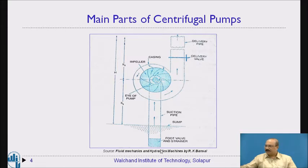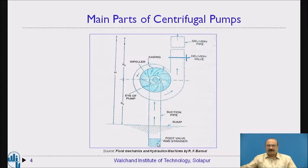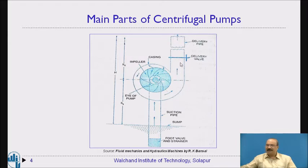The inlet takes place through this particular section, which we call the suction pipe. Here we are providing a foot valve and a strainer, because any unwanted dirt should not enter the pipe — that is the reason we provide a strainer, which also acts as a filter. This is the suction part, and then it connects to the impeller. These are the blades of the impeller, and this particular part — the inlet of the impeller — we call the eye. Then this is the delivery pipe.